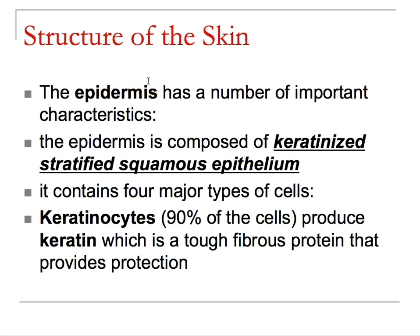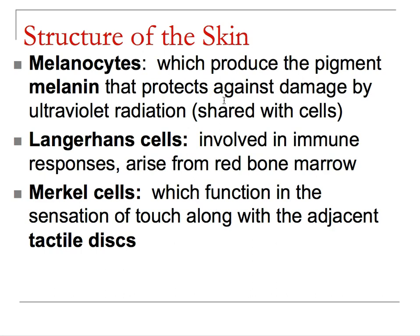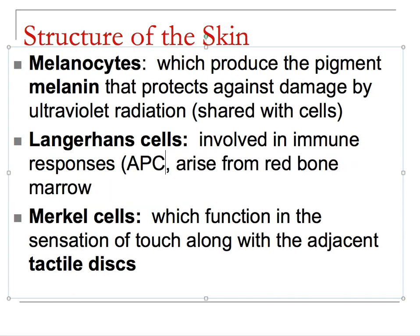The epidermis is made up of keratinized stratified squamous epithelia. There are four major cell types found in the tissue: keratinocytes are the main population; melanocytes produce melanin pigment that is shared with adjacent cells, and melanin production increases with ultraviolet radiation; Langerhans cells are antigen-presenting cells involved in immune responses, made in the red bone marrow, that look for foreign material; and Merkel cells function in the sensation of touch.